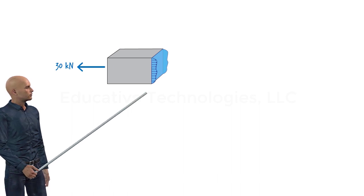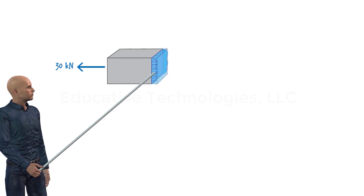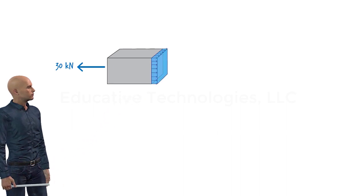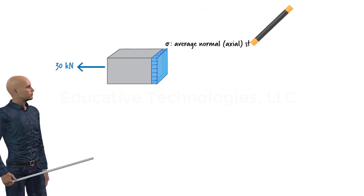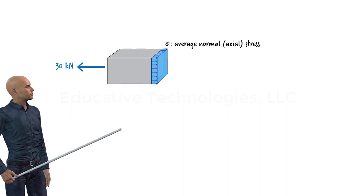Therefore, we can replace this non-linear force diagram with a rectangular prism. We refer to this constant force as the average normal or axial stress. We use symbol sigma (σ) to denote this type of stress.